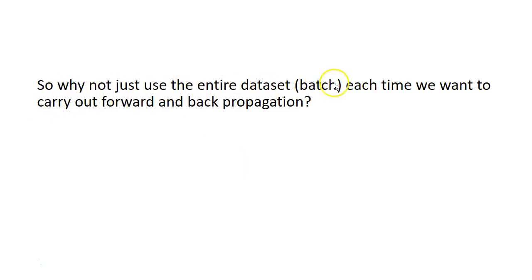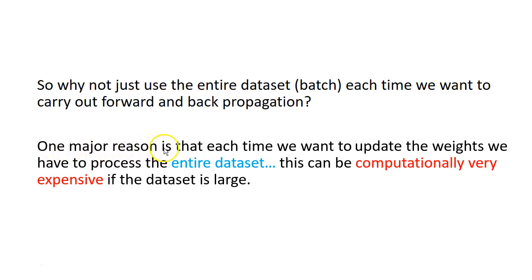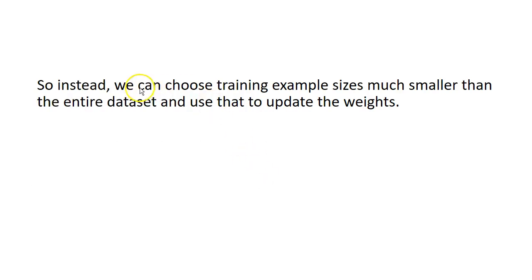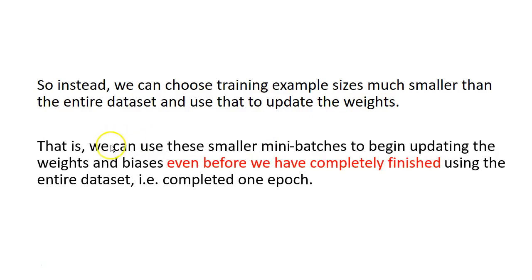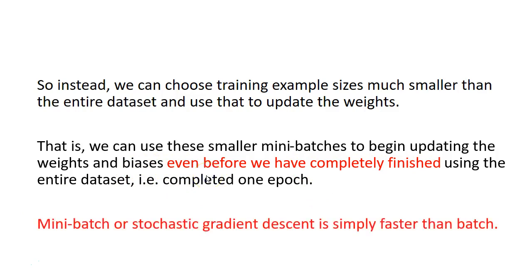So why not just use the entire data set — that is, batch — each time we want to carry out forward and back propagation? One major reason is that each time we want to update the weights we have to process the entire data set, which can be computationally very expensive if the data set is large. Instead we can choose training example sizes much smaller than the entire data set to update the weights each time. We can use these smaller mini-batches to begin updating the weights and biases even before we have completed one epoch. So mini-batch or stochastic gradient descent is simply faster than batch.